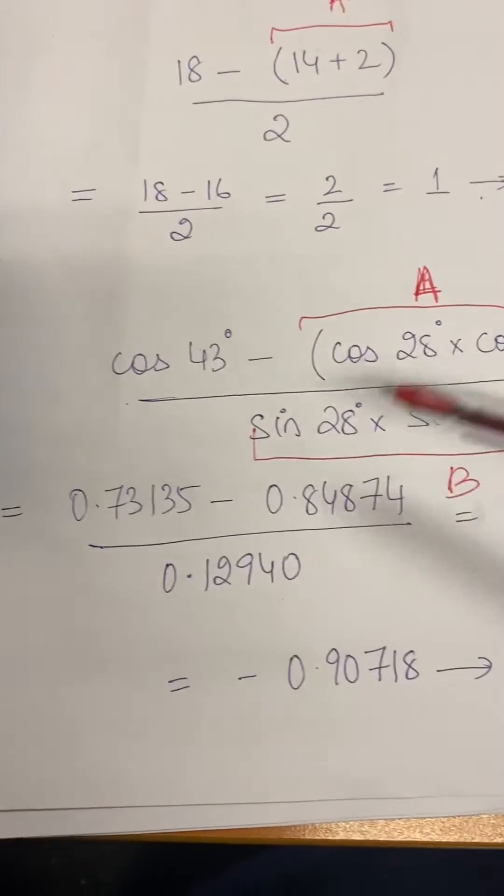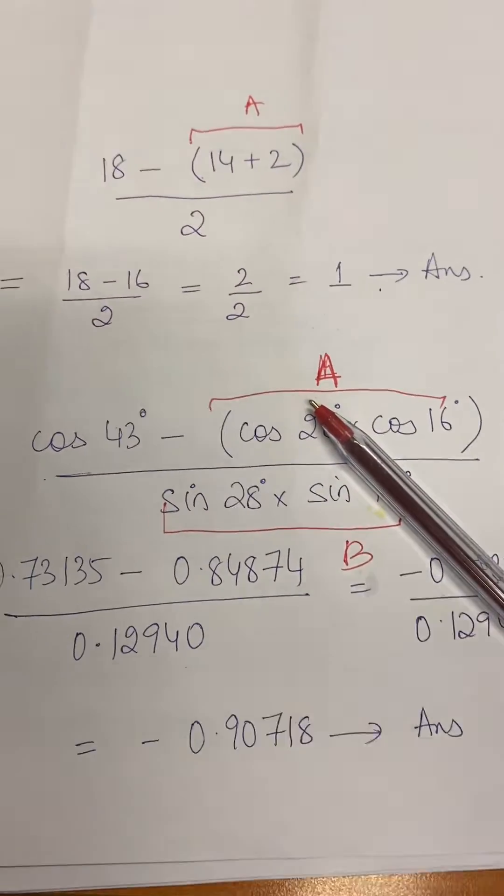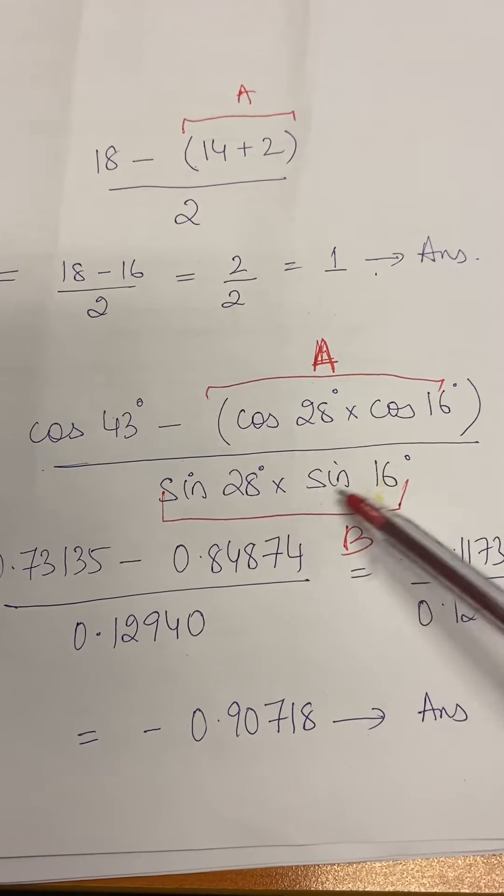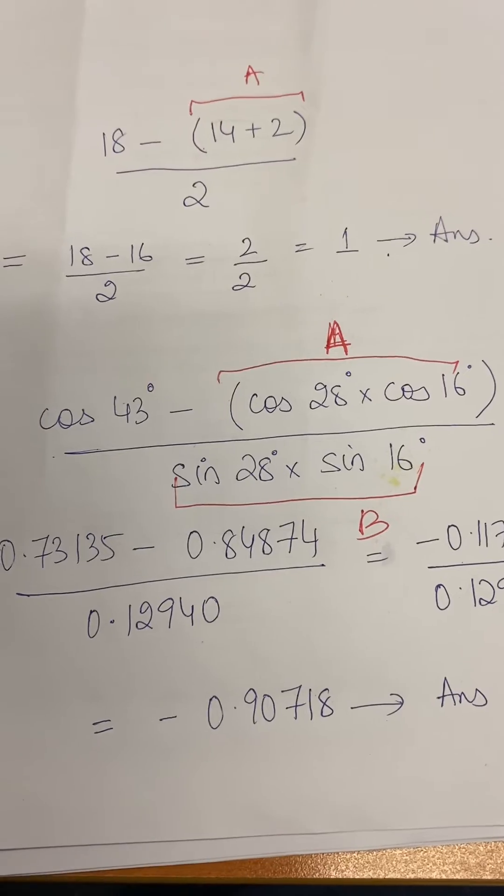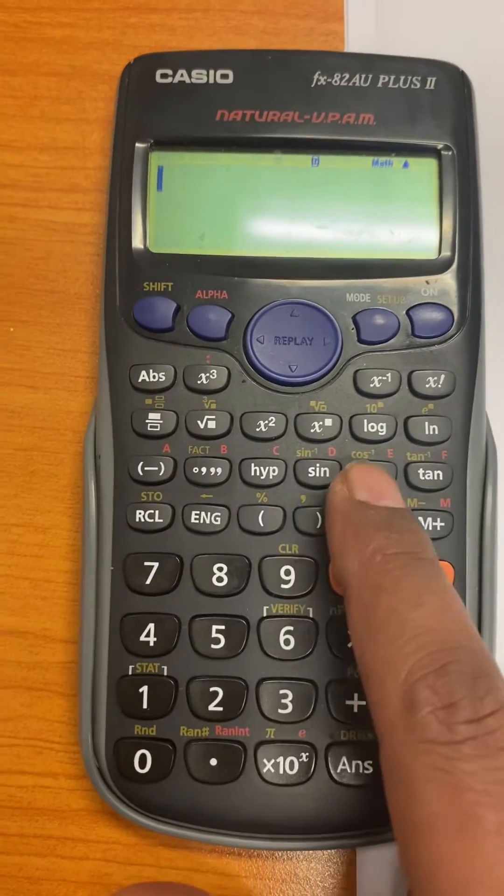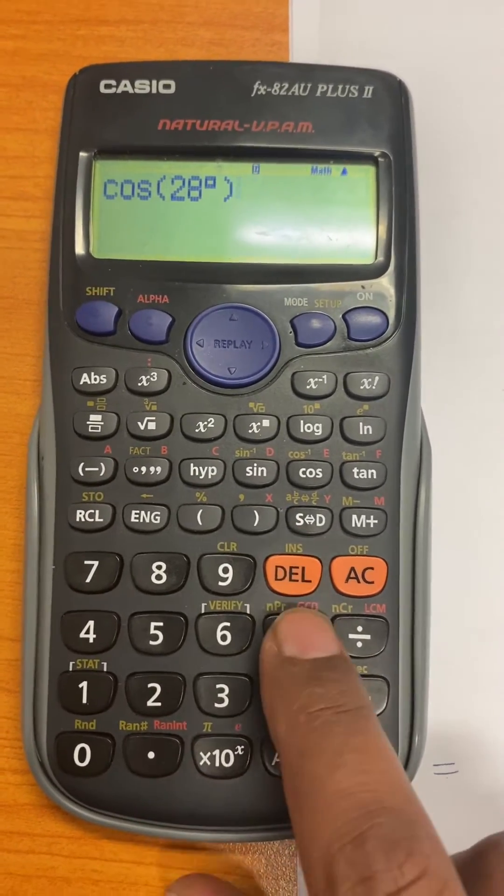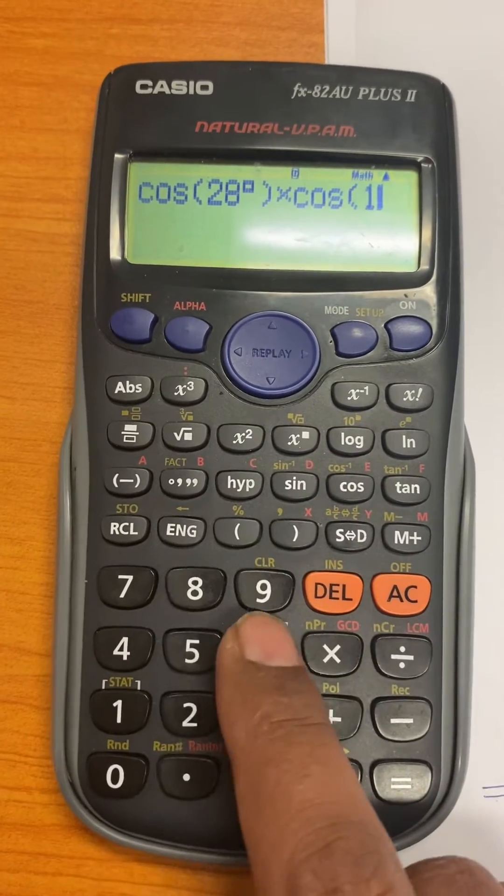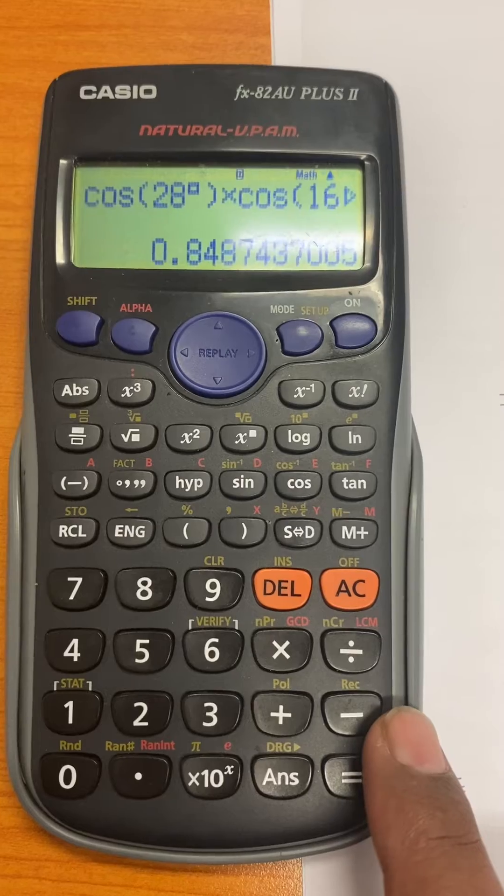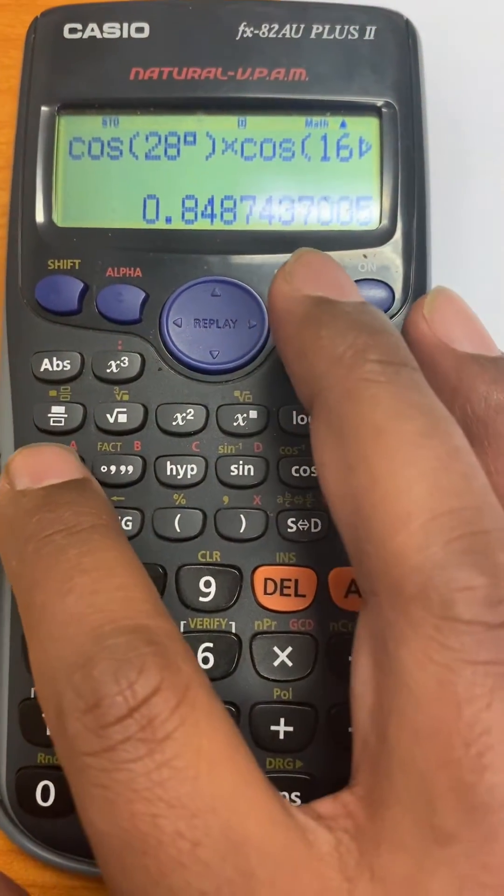Now let's take the more complicated example here where you have cos 28 degrees multiplied by cos 16 that you want to denote the letter A to, and then you have sin 28 multiplied by sin 16 that you want to denote the letter B. So you don't have to write it like that but this is just for your understanding. So what I will do is press cos 28 degrees, multiplied by cos of 16 degrees, and what I get as the answer here is 0.84874. So I can press shift recall and give it the letter A.